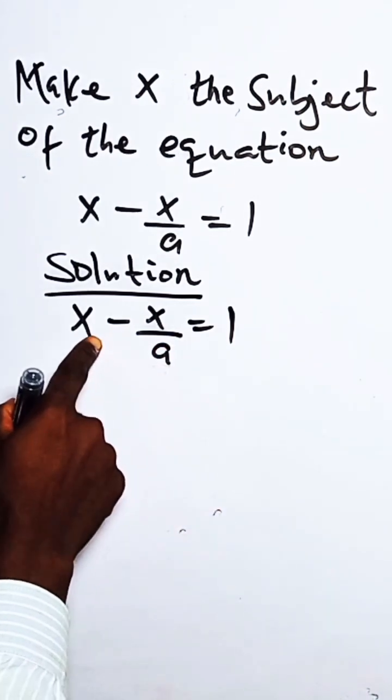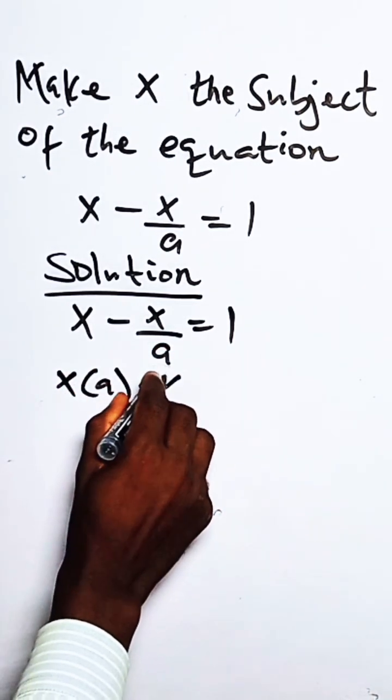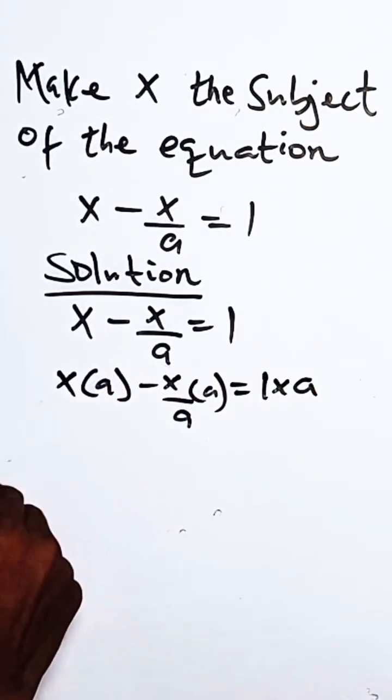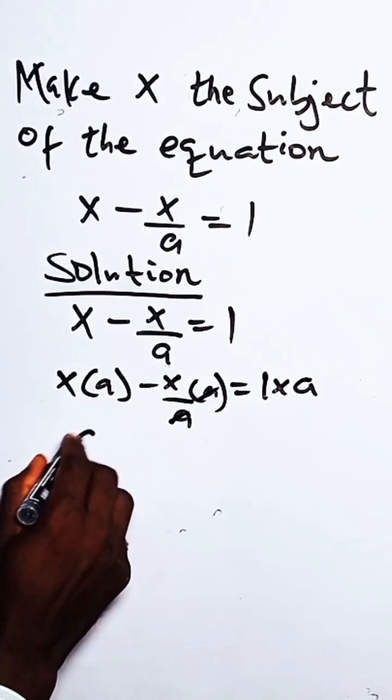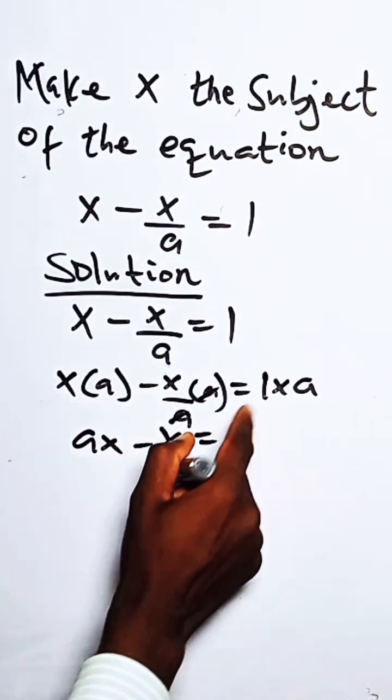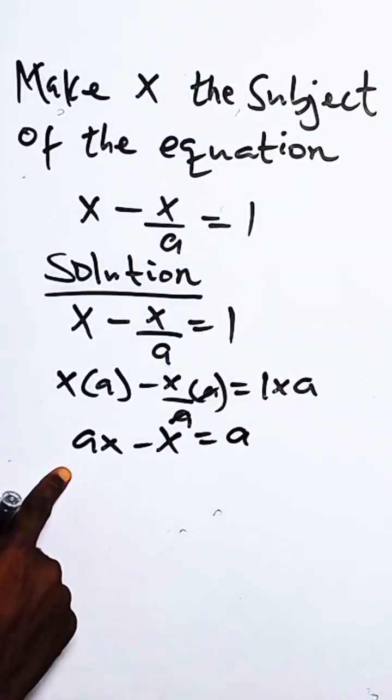of the equation with a. So let me say x times a minus x over a equals one times a. Why do we do that? To eliminate this. So we have a times x to be ax, minus x times one is x, equals one times a is a. So I look at this, you can